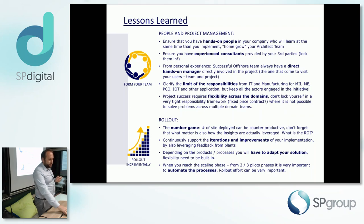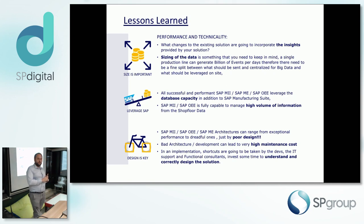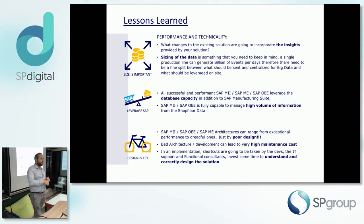In terms of performance and technical scalability, be careful: the volume of information in manufacturing is huge. Take pressure and temperature as an example — one equipment on a shop floor can produce 400 data points multiplied by 1,000 per minute. That is an enormous volume of information, and it's important to keep in mind that it doesn't necessarily make sense to ship everything to the cloud and do analysis afterward.